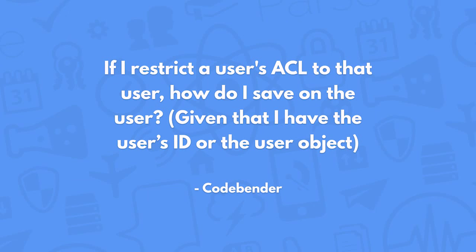If I restrict a user's ACL to just that user, how do I save on that user? If you have an ACL on a user and it's only to the user, that user can already save itself to Parse. If you want to save it as a different user or without a user, you can do it through cloud code and use the master key, because that will override any ACLs that you have on the object.